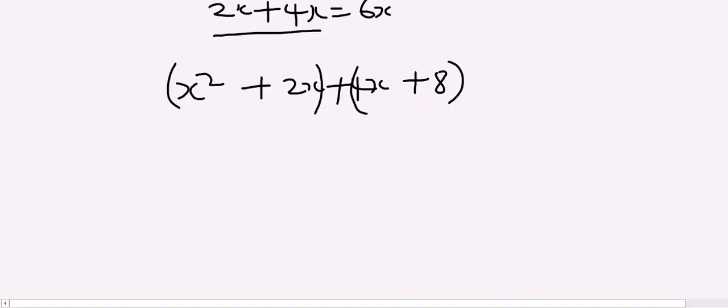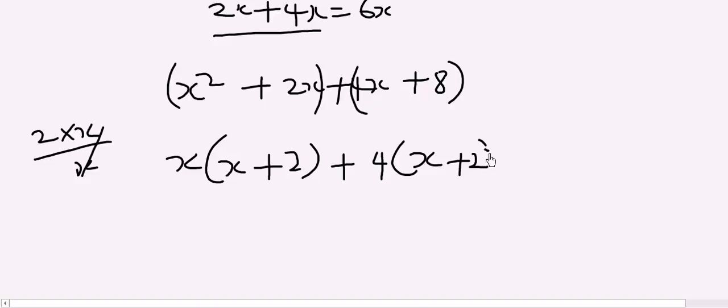In our first bracket, what is common to both sides is x. x² divided by x gives me x, 2x divided by x gives me plus 2. Plus what is common to both sides here is 4. So that 4x divided by 4 gives me x, and 8 divided by 4 gives me plus 2.